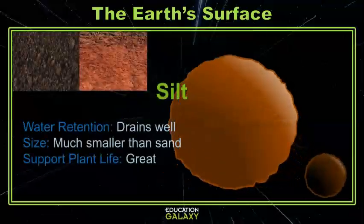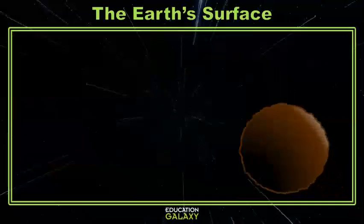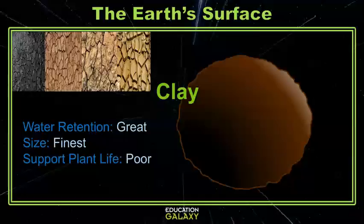Next is silt. Silt is much, much smaller than sand, and it's the best single soil component. That's because it drains well, which means it supports plant life. The smallest type is clay. Due to its small size, it retains water really well, but it also packs together, so sometimes it's hard for water to get into clay. Clay is unique in that if you rub it in your hands, it'll form a tight ball.